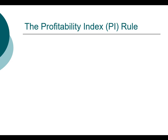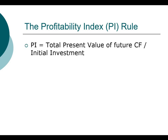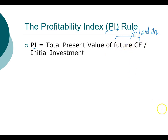In this video we're going to look at the third capital budgeting rule called the Profitability Index. The Profitability Index, or PI, is defined as the total present value of future cash flows divided by the initial investment. When we talk about future cash flows, we are talking about cash flows starting from year one and going forward.